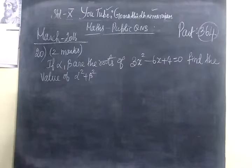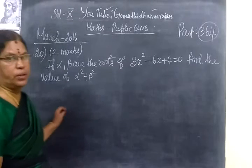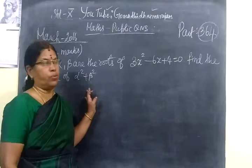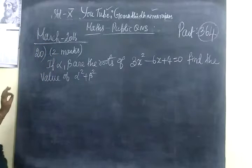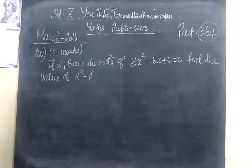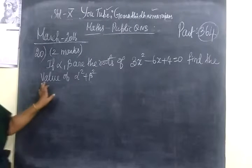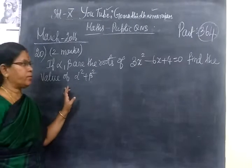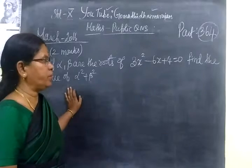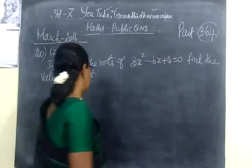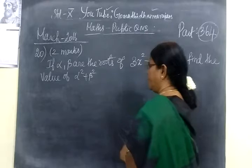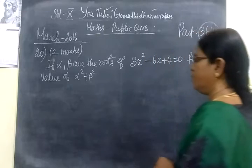Good evening to all. Now we see part 364, same topic questions, March 2016, 20th question. It is coming under 2 law. If alpha and beta are the roots of 3x² minus 6x plus 4 equal to 0, then find the value of alpha square plus beta square.